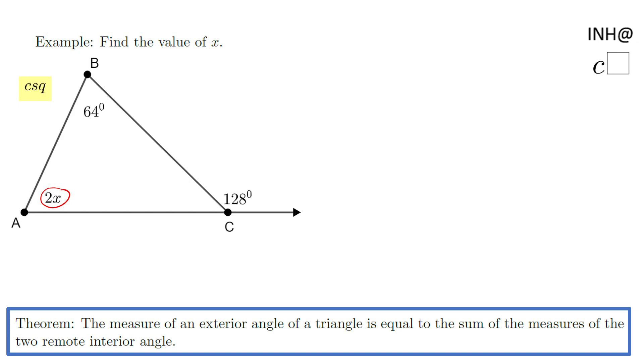The measure of an exterior angle of a triangle is equal to the sum of the measures of the two remote interior angles. An exterior angle for our triangle ABC is 128, and the other two remote interior angles are these two angles here.